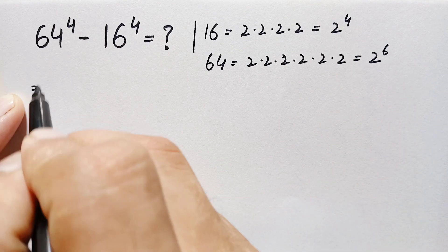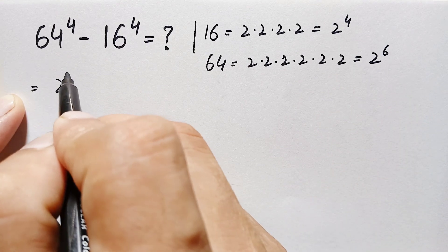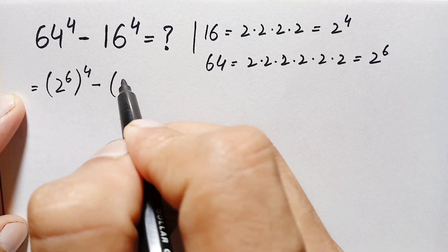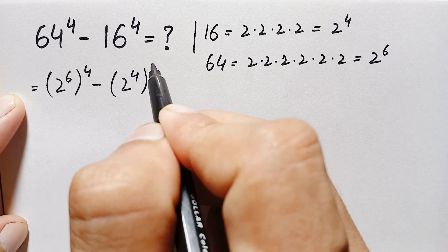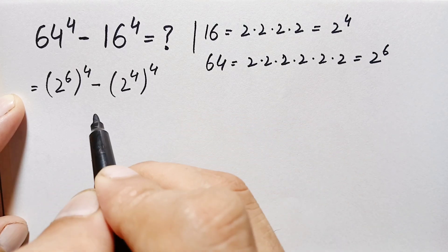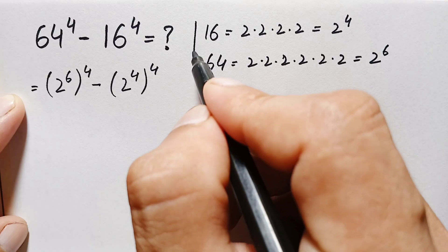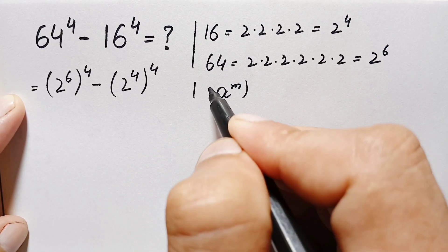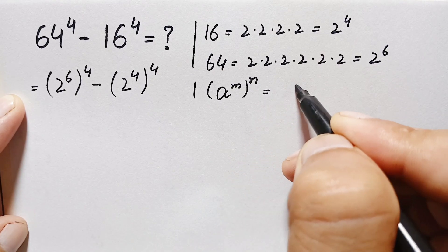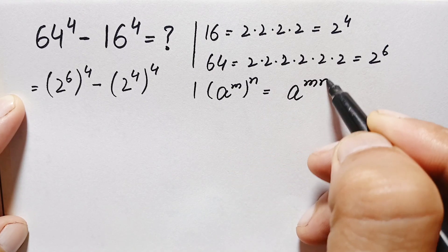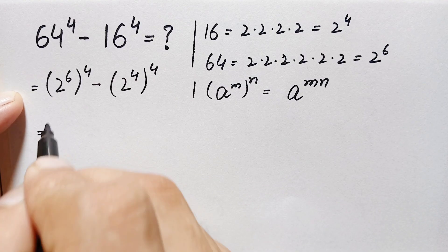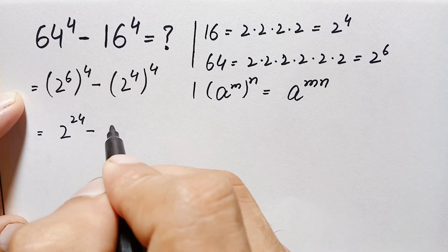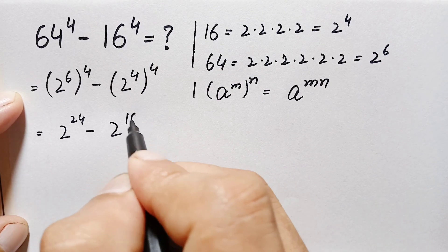So we replace these two bases: 64 becomes 2^6 raised to power 4, minus 16 becomes 2^4 whole raised to power 4. Here in both terms we use the exponential identity (a^m)^n = a^(m×n). This gives us 2^(6×4) = 2^24 minus 2^(4×4) = 2^16.